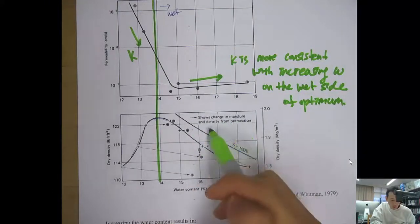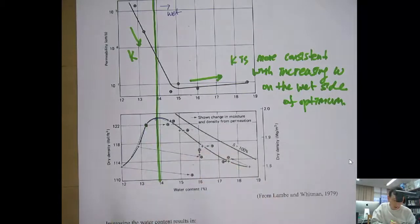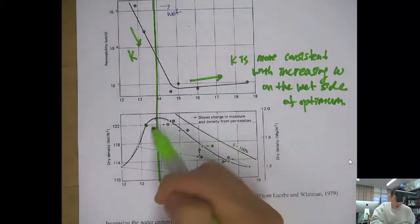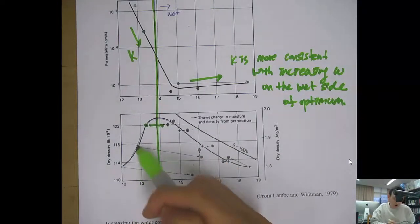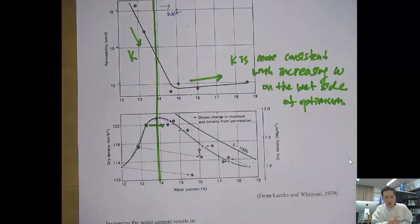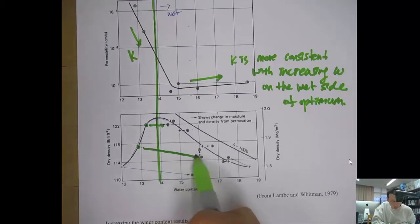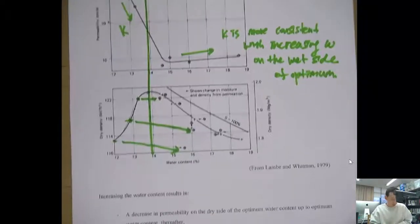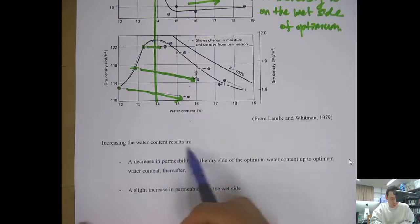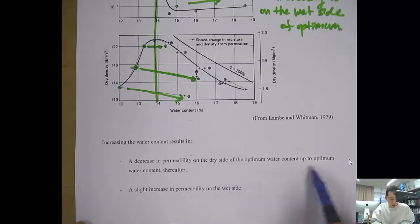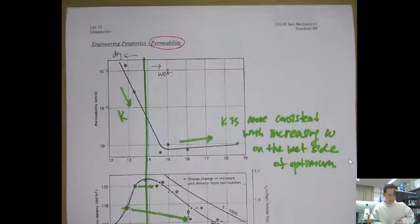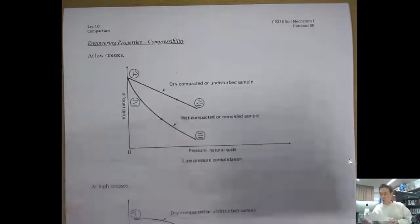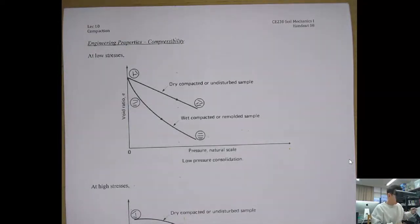This arrow shows the change in moisture and density from permeation. As you inject water, water content increases, and dry density slightly decreases, which causes a reduction in permeability. In summary: increasing water content results in a decrease in permeability on the dry side of optimum up to the optimum water content, and thereafter a slight increase in permeability on the wet side.